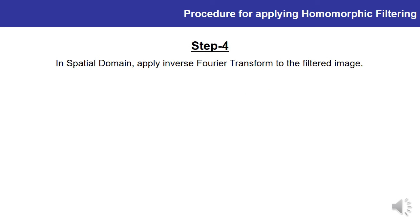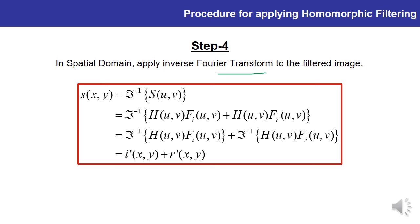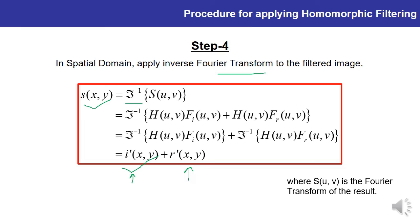Step 4: Apply the inverse Fourier transform to the filtered image to return to the spatial domain. Mathematically, you take the inverse Fourier transform of S(u,v), where S(u,v) = H·F_i (illumination) + H·F_r (reflectance). Separating out the two terms gives i'(x,y) + r'(x,y), where i'(x,y) is the illumination component and r'(x,y) is the reflectance component, extracted after applying the inverse Fourier transform.